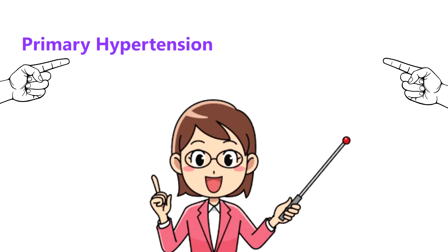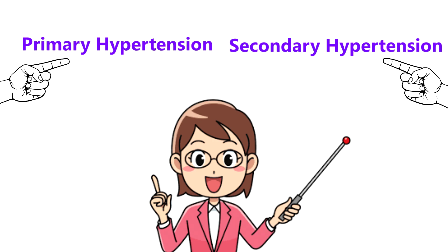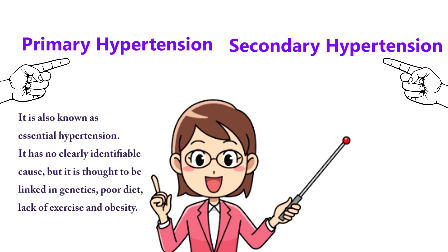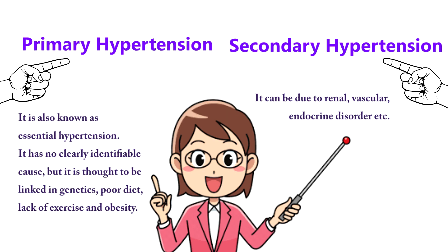Hypertension could be primary or secondary. Primary hypertension is also known as essential hypertension. Secondary hypertension can be due to renal, vascular, or endocrine disorders.